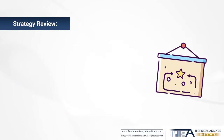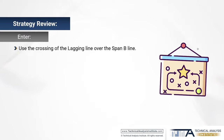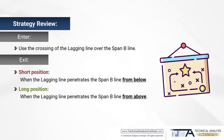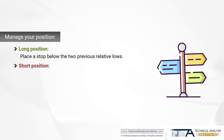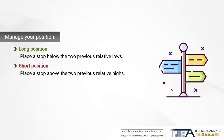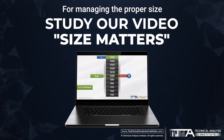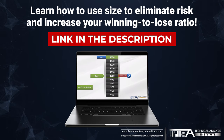So let's reconsider the whole strategy. We enter by using the crossing of the lagging line over span B. How do we exit? We take the opposite signal — if we are in a short position we exit as the lagging line penetrates span B from below; if we are in a long position we exit when the lagging line crosses span B from above. To manage the position, place a stop below the two previous relative lows for a long position, or above the two relative highs for a short position. For managing the proper size to use during this strategy, I suggest you study our video Size Matters, where we dive into details on how to use size to completely eliminate the risk of a position and increase our winning-to-loss ratio.